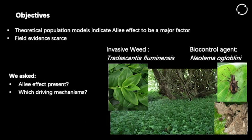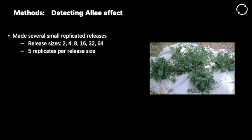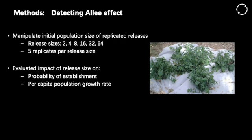Secondly, we want to know what the mechanisms driving it are. My methods: we made several small releases on created patches. We did created patches because this allowed us to make them very isolated from each other and also to make sure that there is no background Tradescantia to which our beetles can disappear, or background beetles coming to our patches. We did this at the beginning of the summer, and by the end of the summer we evaluated each site on the probability of establishment and the growth rate.